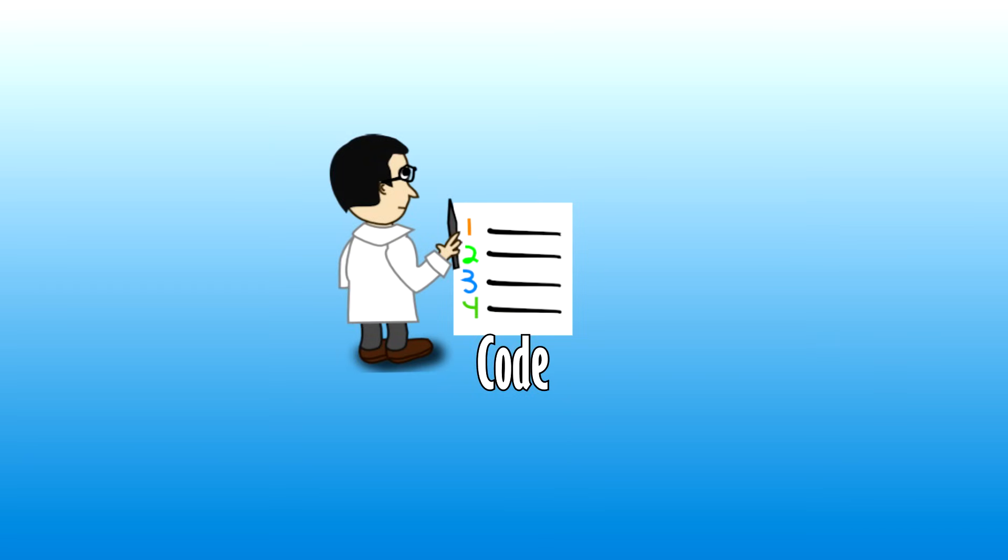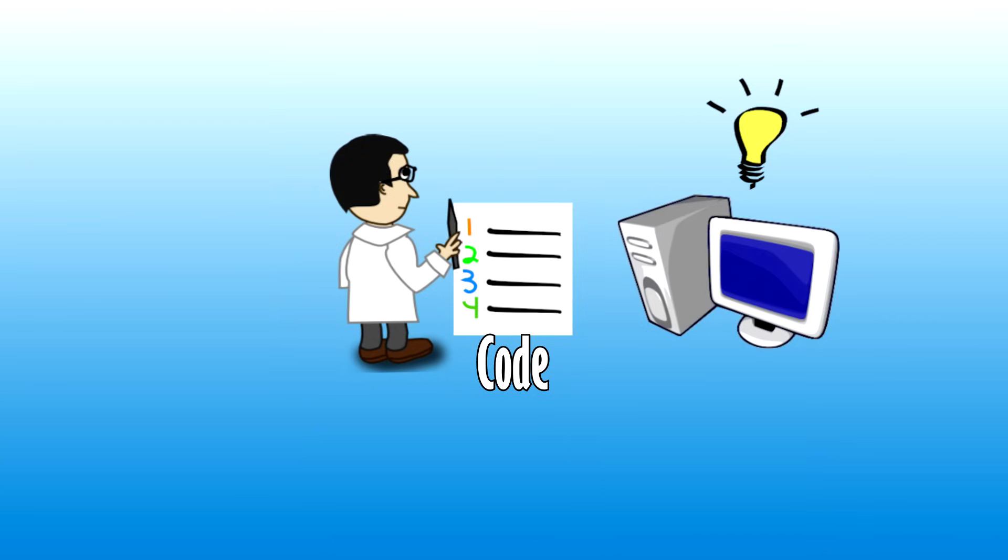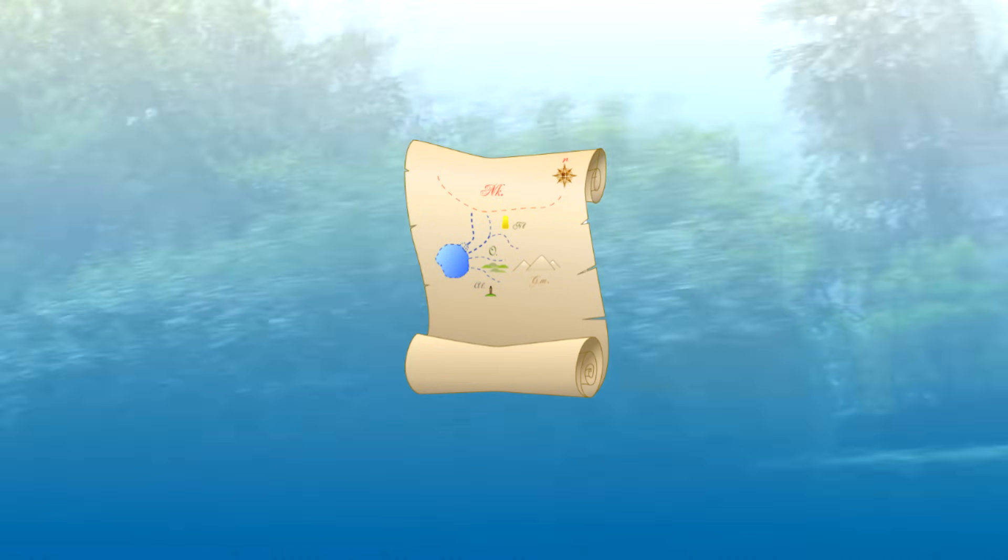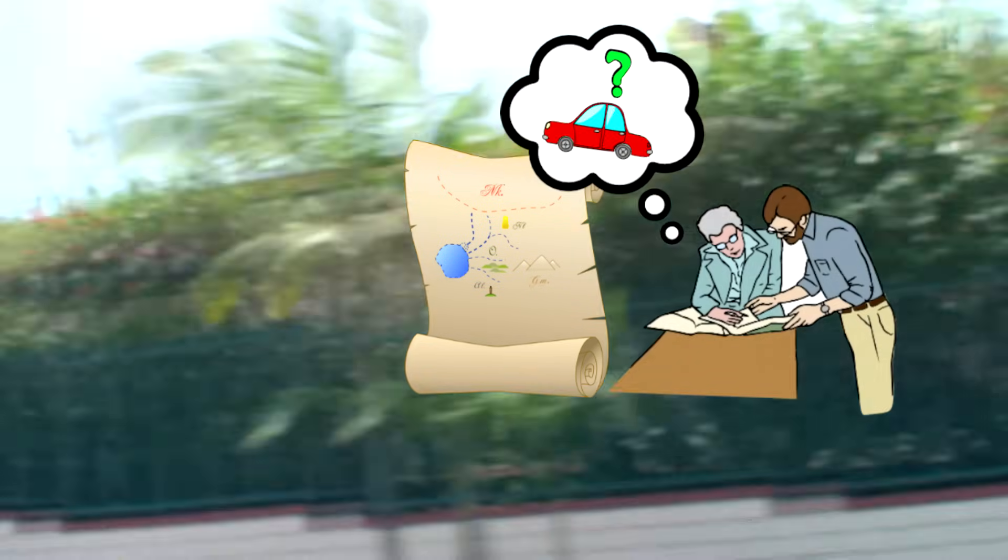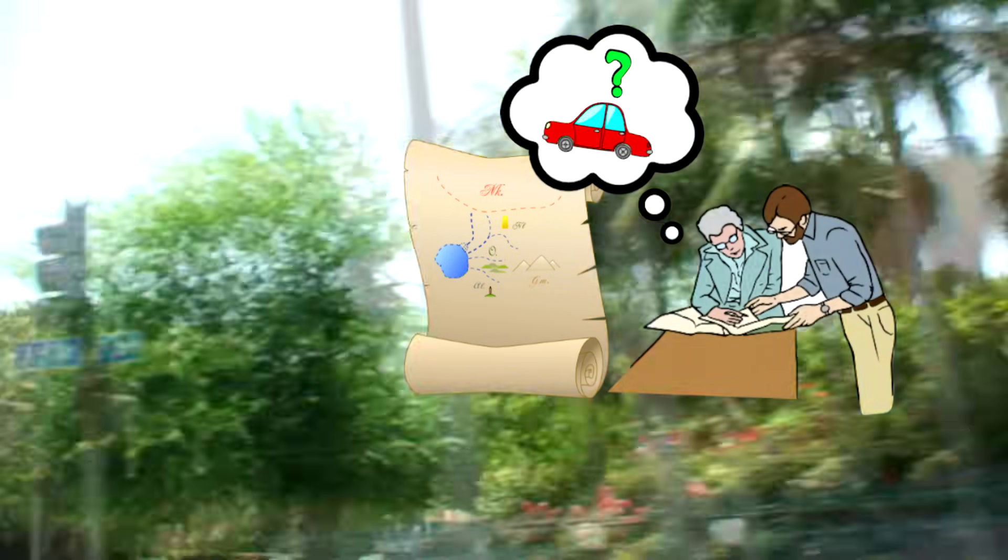So you can think of a computer programmer explaining to a computer what we want it to do as like trying to give someone directions for how to drive somewhere when they don't even know what a car is. So you can see what kind of complications you'd run into.